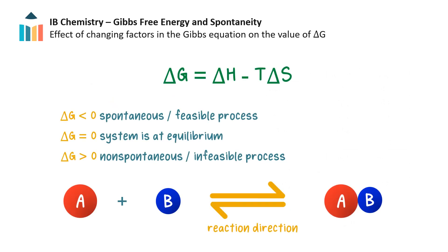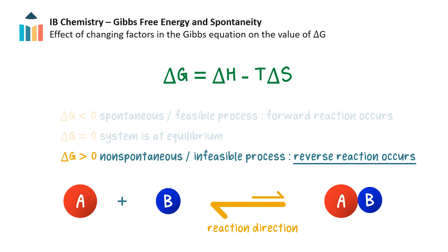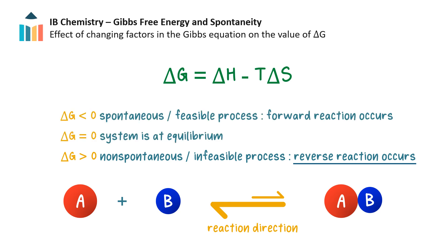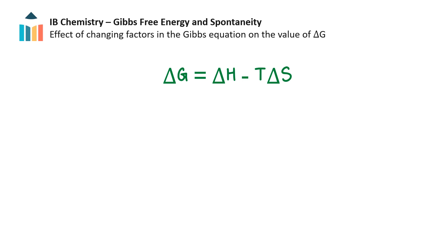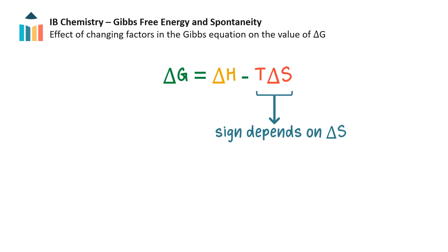Since the change in Gibbs energy of a system indicates reaction spontaneity, it can be used to deduce the most likely direction of a reversible reaction. A negative delta G tells us the forward reaction is spontaneous and therefore the forward reaction will occur. A positive delta G tells us the forward reaction is not spontaneous and therefore the reverse reaction will occur. Both spontaneous and non-spontaneous reactions can be exothermic or endothermic and have an increase or decrease in system entropy. Their spontaneity therefore depends on the relative sizes of these two terms in the Gibbs equation. Temperature is always positive, and so the sign of the T∆S term is always the same as the sign of delta S.